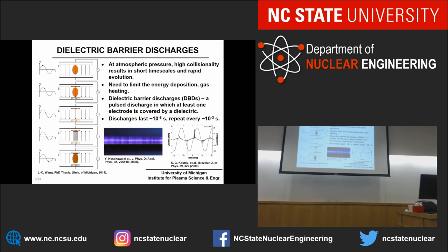One plasma source is the dielectric barrier discharge: two electrodes with a dielectric between them. A sinusoidal voltage is applied; when the electric field gets high enough, breakdown occurs, which begins charging the dielectric surfaces. Once that charges up, the breakdown shuts off, and as the voltage falls back down, we get breakdown again. This produces a series of very brief discharges — lasting tens to hundreds of nanoseconds — pulsed at kilohertz frequencies. This keeps gas heating to a minimum and prevents arc formation.